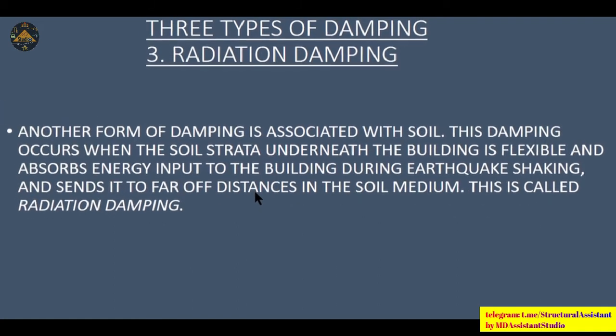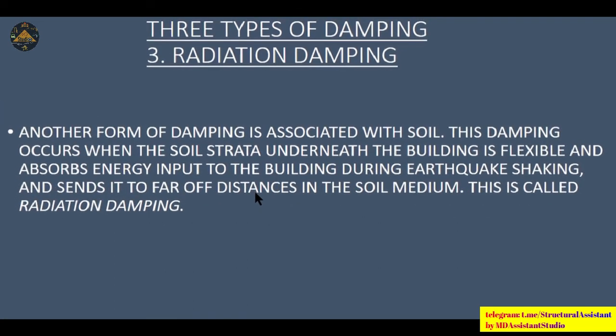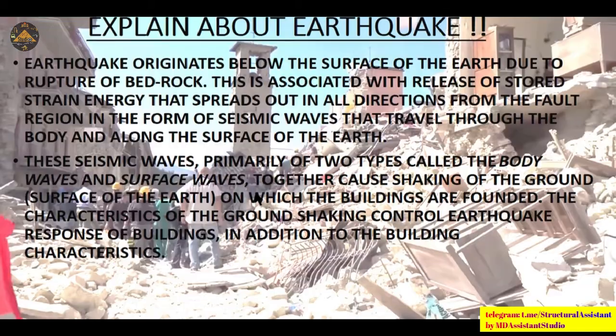Third is called radiation damping. This damping occurs when the soil underneath the building is flexible and absorbs energy input to the building during earthquake shaking, sending it to far-off distances in the soil medium. This is called radiation damping.